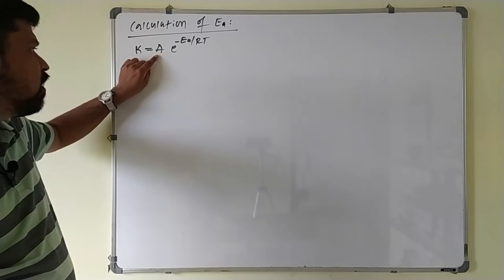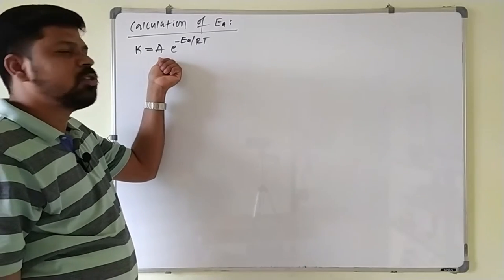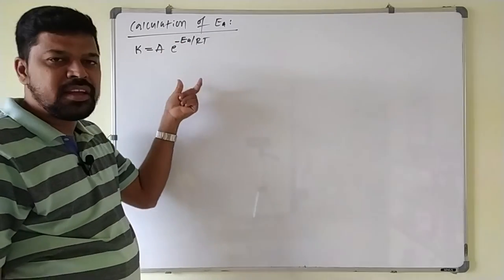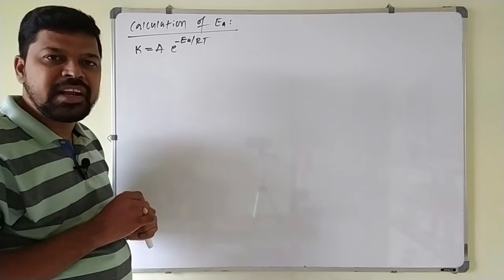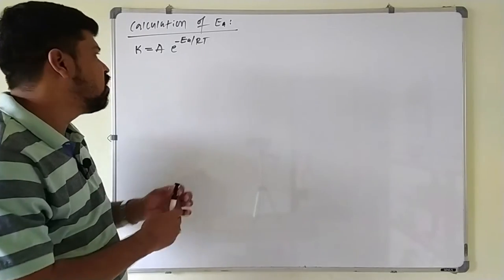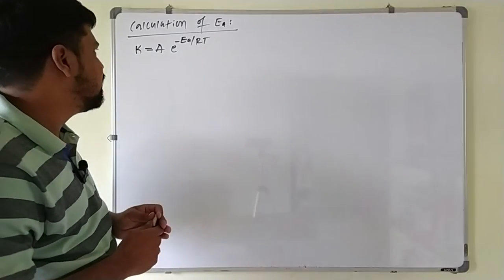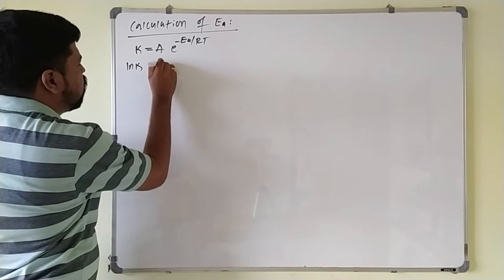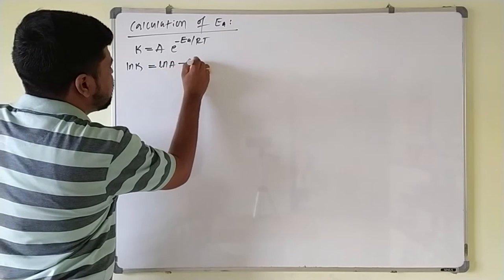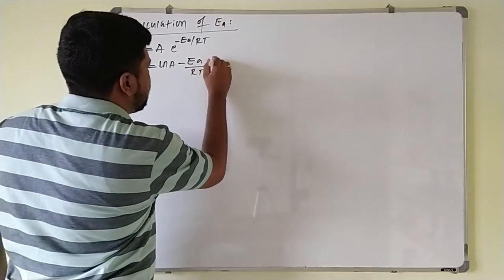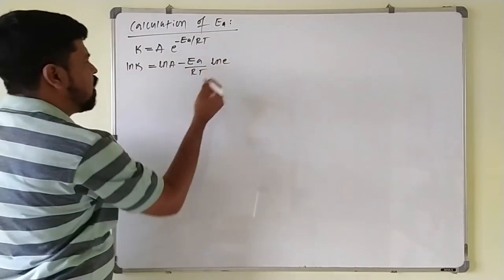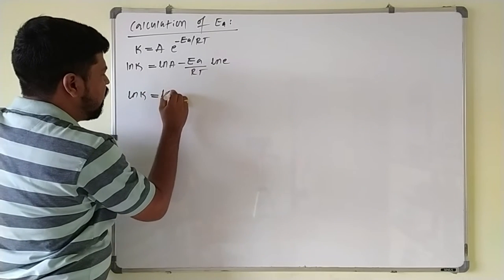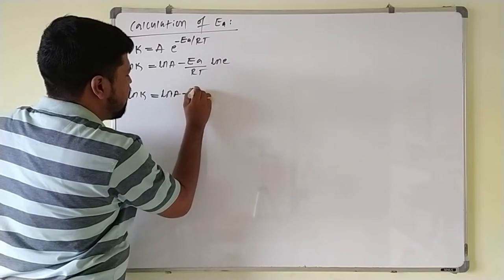Here, A is the Arrhenius frequency factor, also called the collision frequency. The term e raised to minus Ea by RT indicates the fraction of molecules which are having sufficient kinetic energy to form a product upon collision. This term is also called the Boltzmann factor. Applying the natural log on both sides, we get ln k equal to ln A minus Ea by RT, since ln e equals 1.